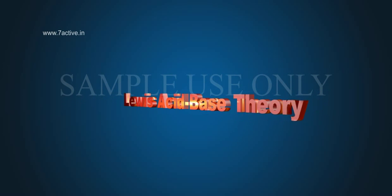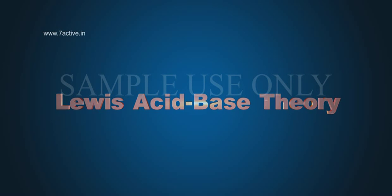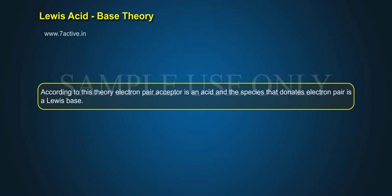Lewis Acid-Base Theory: according to this theory, the electron pair acceptor is an acid, and the species that donates an electron pair is a Lewis base.